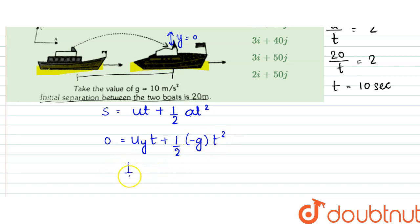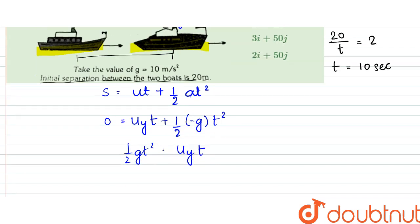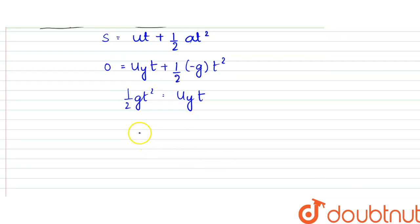So from here, half g t square would be equal to uy t. So from here uy can be written as half into g is 10 into time was 10. This would get cancelled, so uy from here would be equal to 50 meter per second. So along y direction the velocity was 50 meter per second.